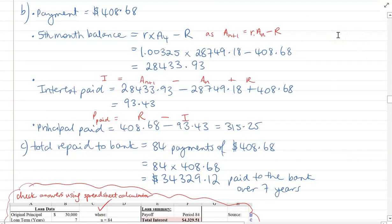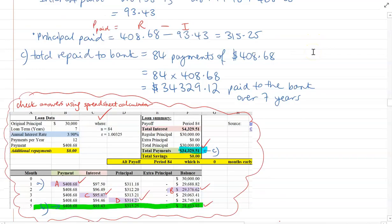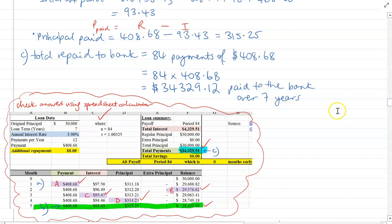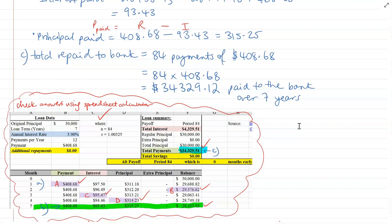For Part C, the total repaid to the bank: making 84 payments in total over those 7 years of $408.68 means altogether I'm paying $34,329.12 back to the bank. I've checked all answers using the spreadsheet calculator, which is also available in the description below this video — feel free to use it for any financial calculations you want to check in a loan scenario.